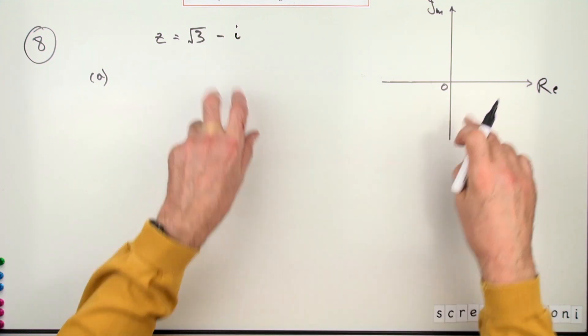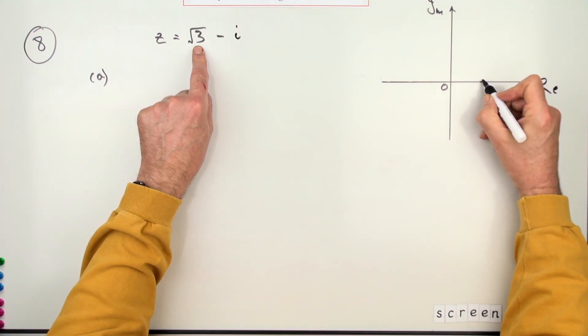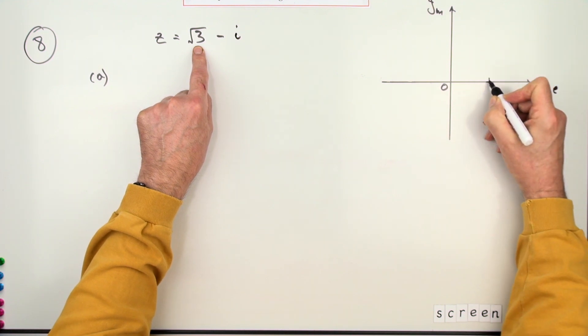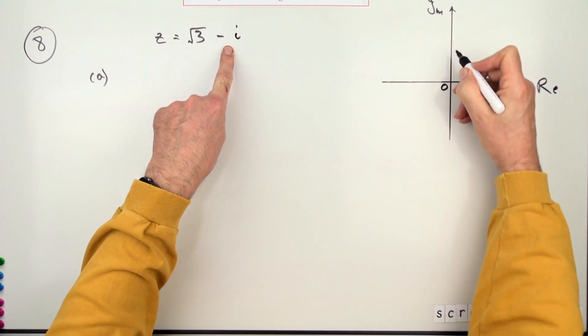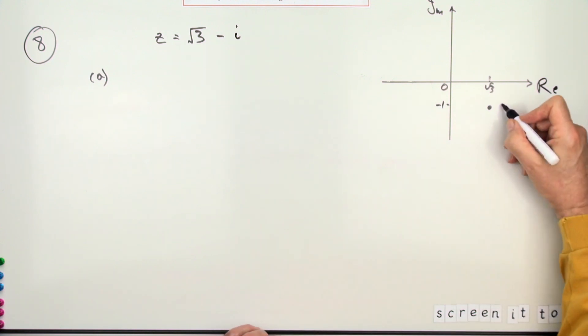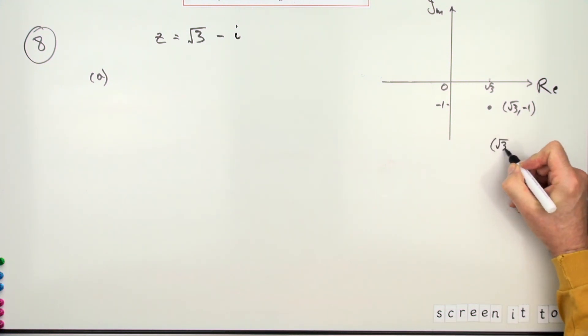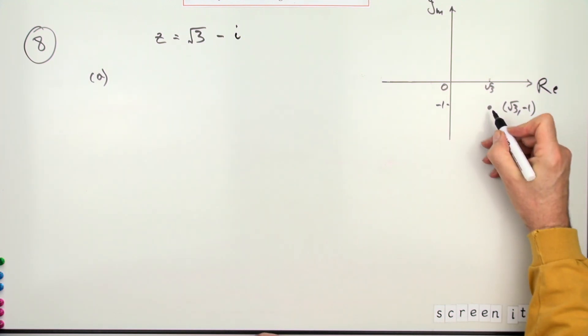It's just plotting a point. That point is root three—I'll just put root three about here—should have put underneath, maybe root three and one down on the imaginary axis, negative one. So the point goes here. Now you could perfectly well just call that point root three along and one down. Notice what you shouldn't call it is root three negative i, but if you did, they're just going to let you off this time.